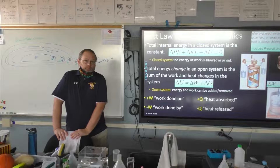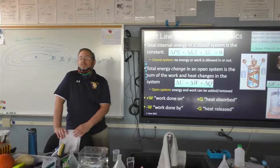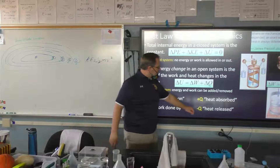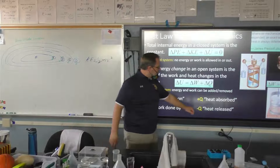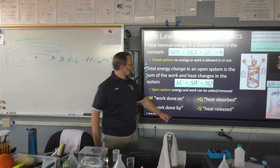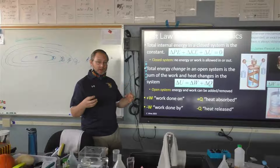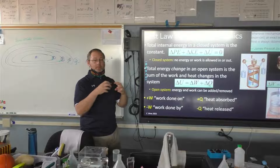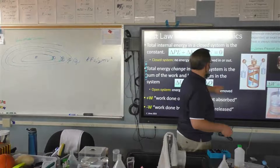Does this idea of heat and work make sense? Heat is Q, work is W. If a system releases heat and becomes cooler, it has a negative Q. When a system gains heat and becomes warmer, it has a positive Q. When a system expands against the environment and does work, it has a negative W. When a system is compressed by the environment and gets smaller, work is done on the system and it has a positive W.